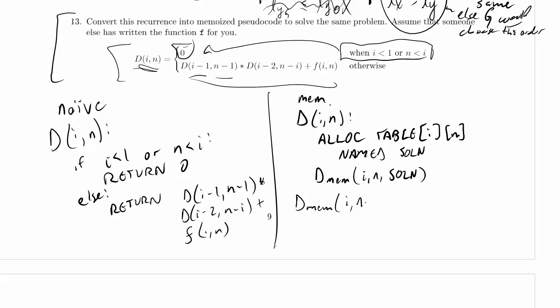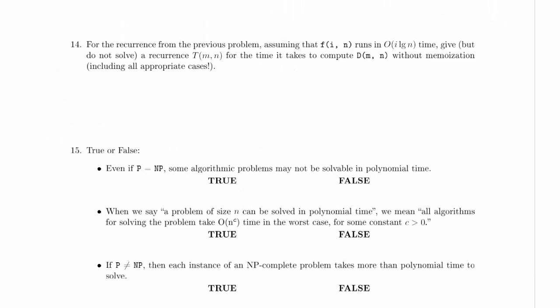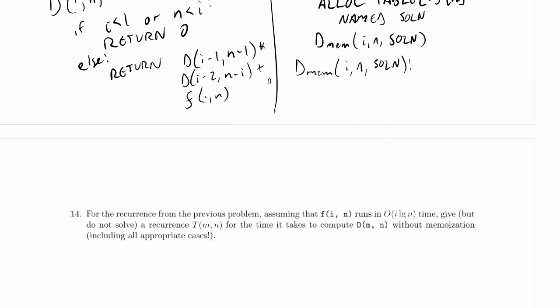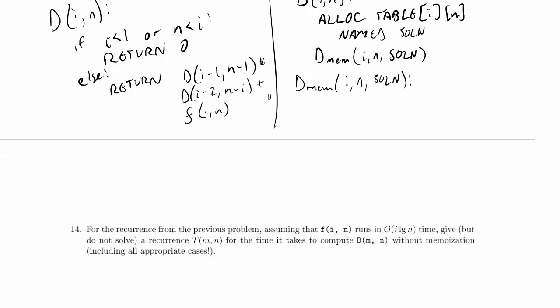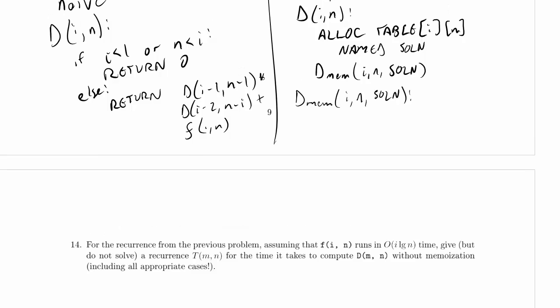So how does dmem work? Well, obviously dmem takes i, n, and a solution array. Now I'm a little concerned looking at this n minus i here that I could end up going to very negative values, and I only allocated this i by n table. So I'm actually going to build my base cases into the memoized version without storing them in the table. It's usually not a problem to not store your base case in the table. You can just recompute it every time. I know this is going to be slightly different than exactly what I said to do for building your table. Exactly what I said to do will probably work pretty well, but I'd rather set my base cases aside here.